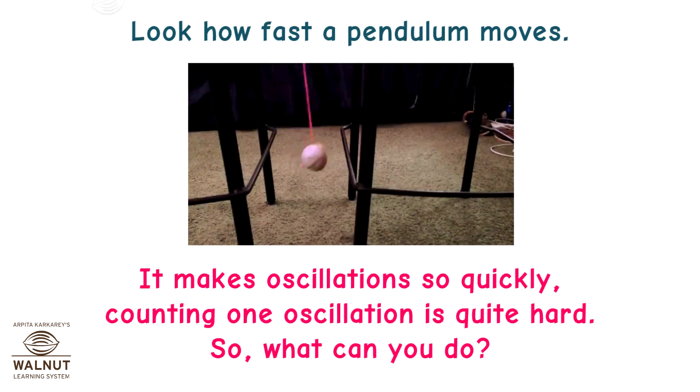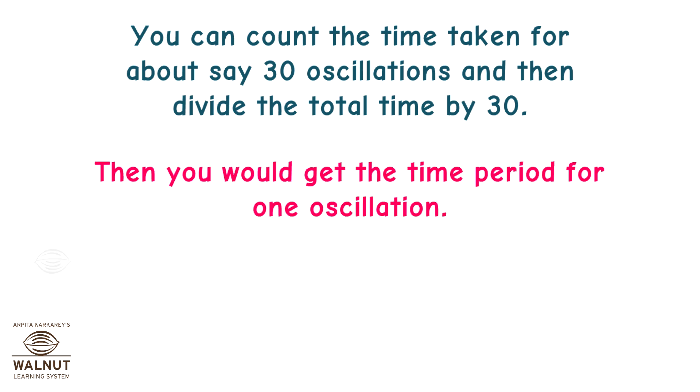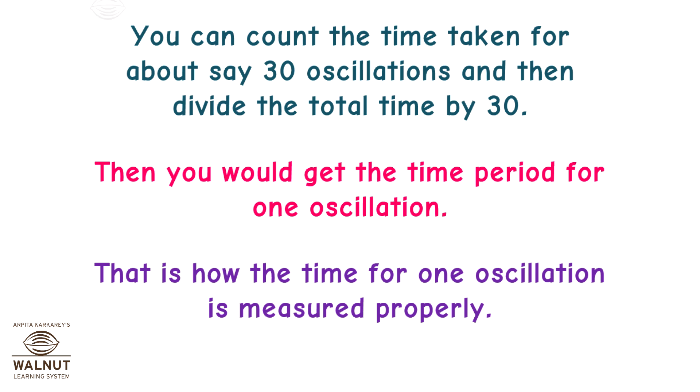Look how fast a pendulum moves. It makes oscillations so quickly, counting one oscillation is quite hard. So what can you do? You can count the time taken for about, say, 30 oscillations and then divide the total time by 30. Then you would get the time period for one oscillation. That is how the time for one oscillation is measured properly.